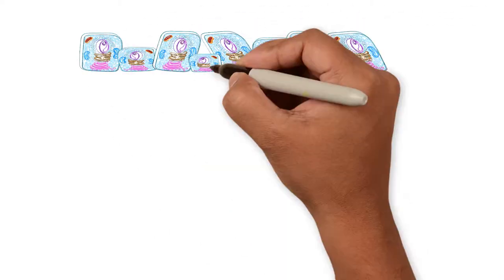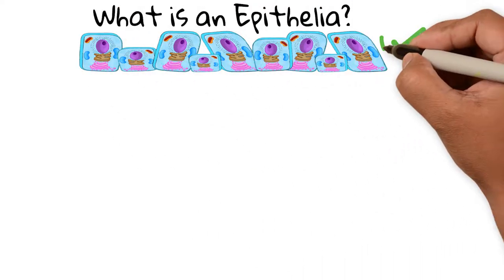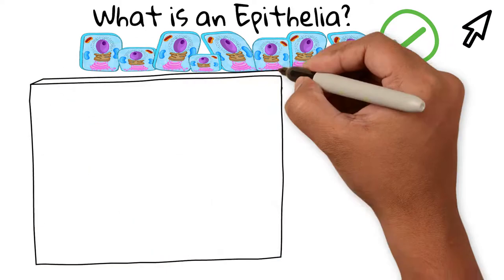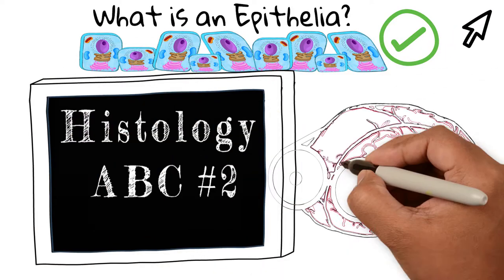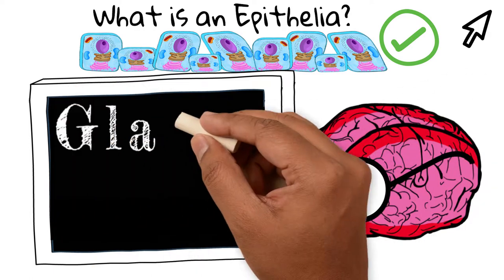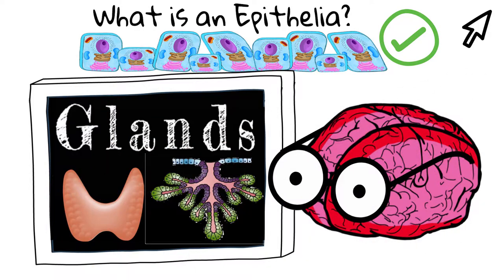Since we already reviewed the general characteristics of the epithelia and learned about the covering epithelia in the first histology ABC video, in this histology ABC video we'll talk about the secretory epithelia and glands.